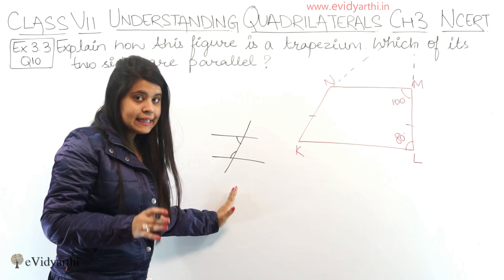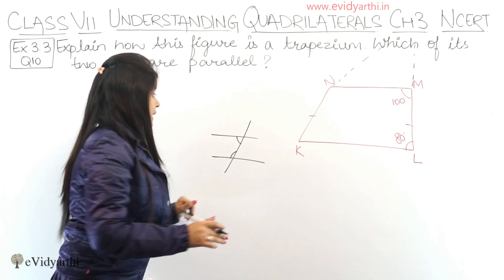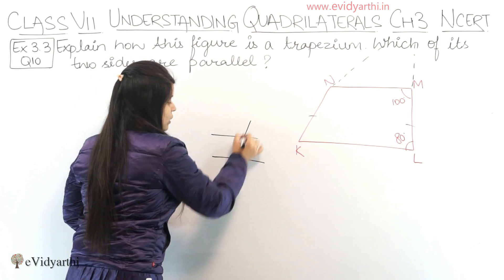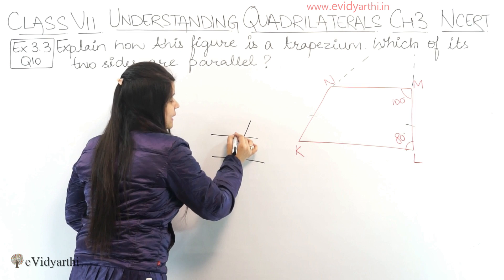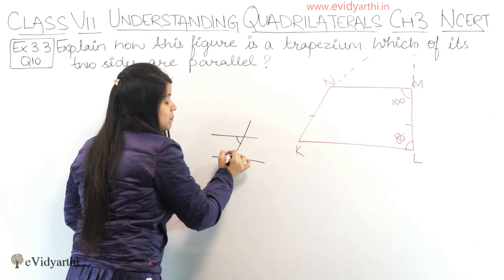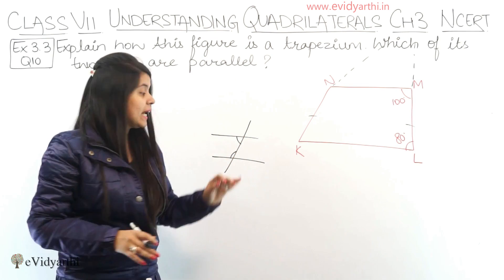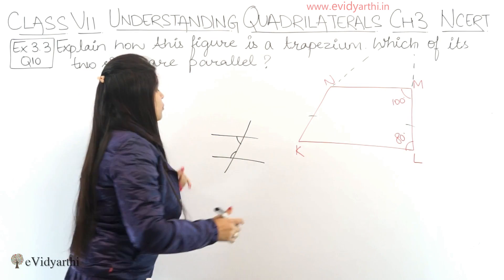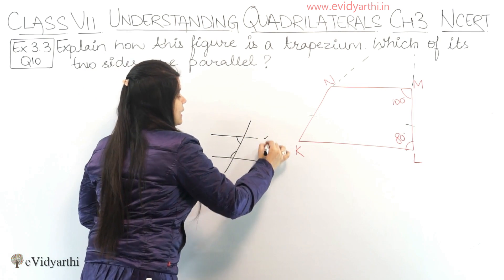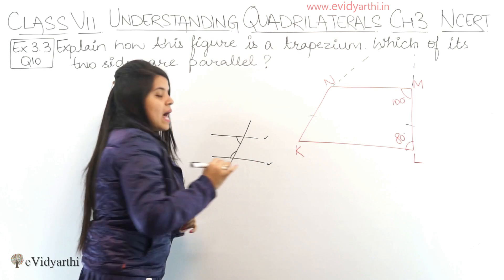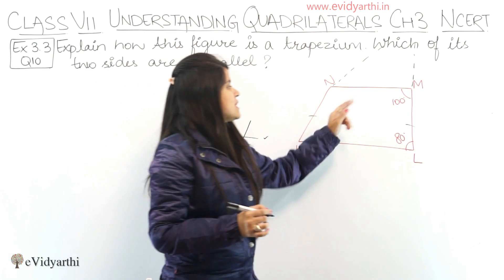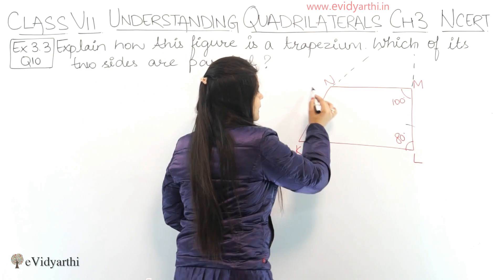We can tell that the line intersects, and the sum of the angle measures of the line that intersects — that is, the co-interior angles — is 180 degrees. So we can prove that these two lines are parallel. The same applies here.